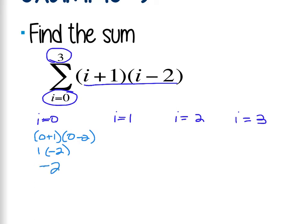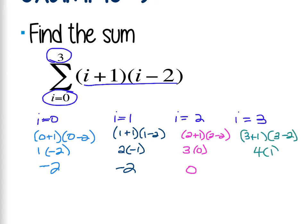And then it would be when i is 1. So this would be 1 plus 1 times 1 minus 2, or 2 times negative 1, which is also negative 2. Then you go to the next one where i is 2. So 2 plus 1 times 2 minus 2, or 3 times 0, which is 0. And then the last one where i is 3, so 3 plus 1 times 3 minus 2, or 4 times 1, which is 4.